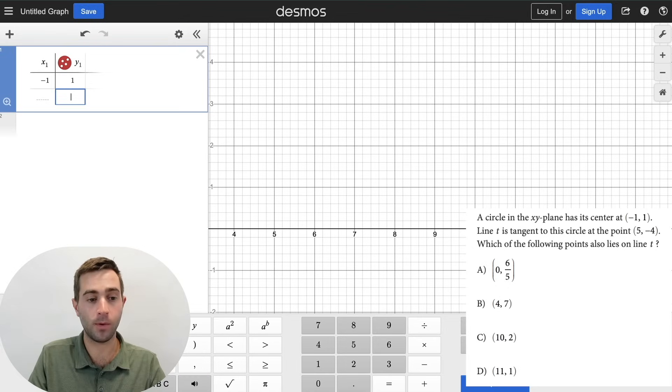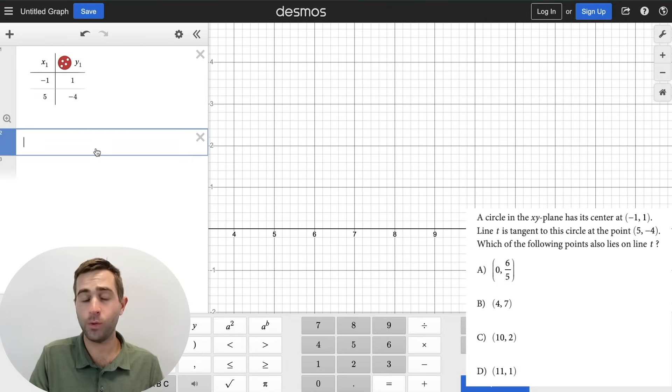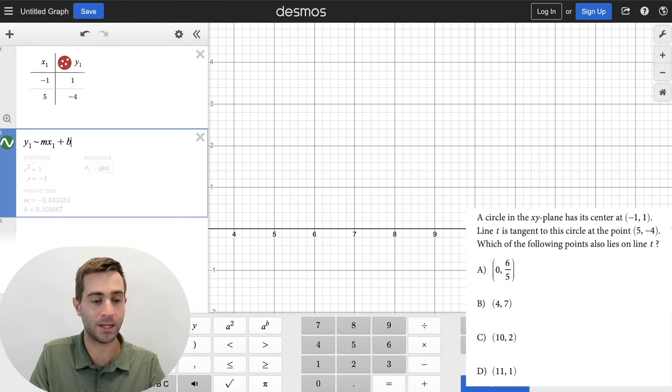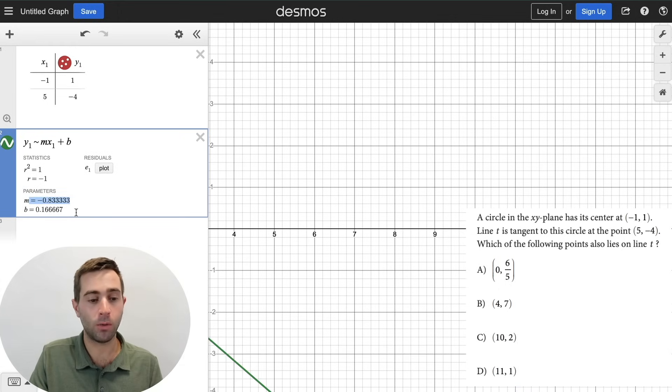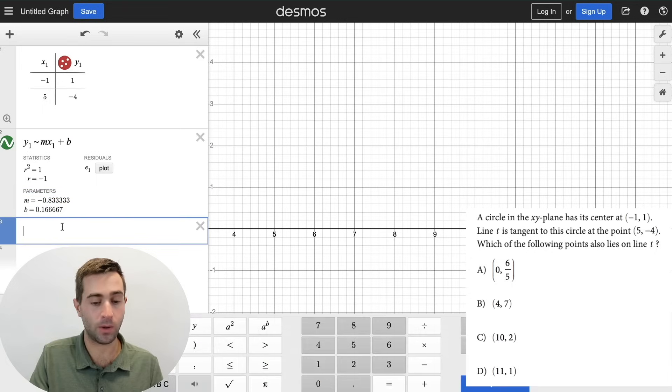So we're going to do negative 1 comma 1, and we're going to do 5 comma negative 4. Now we want Desmos to solve for just the slope, but we can always use Desmos to solve for a full equation of line if we do y1 tilde m x1 plus b. So our slope is negative 0.83333. So I'm just going to write that down here so we can keep it straight as we go through the rest of the question.